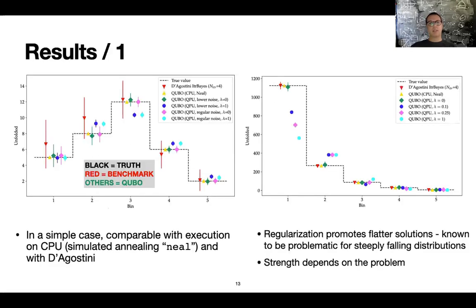So let's look at the result. So it's kind of crowded plot, but the idea is that you have this black dashed line that is the truth and the results are represented by the dots and they have to be compatible with the black line. So the red is the benchmark, D'Agostini unfolding, and all the other ones come from our calculation based on QUBO. So in the simple case where you have this sort of Gaussian-like distribution, basically all the solutions agree relatively well with the ground truth. And this is quite reassuring because it's a simple case.